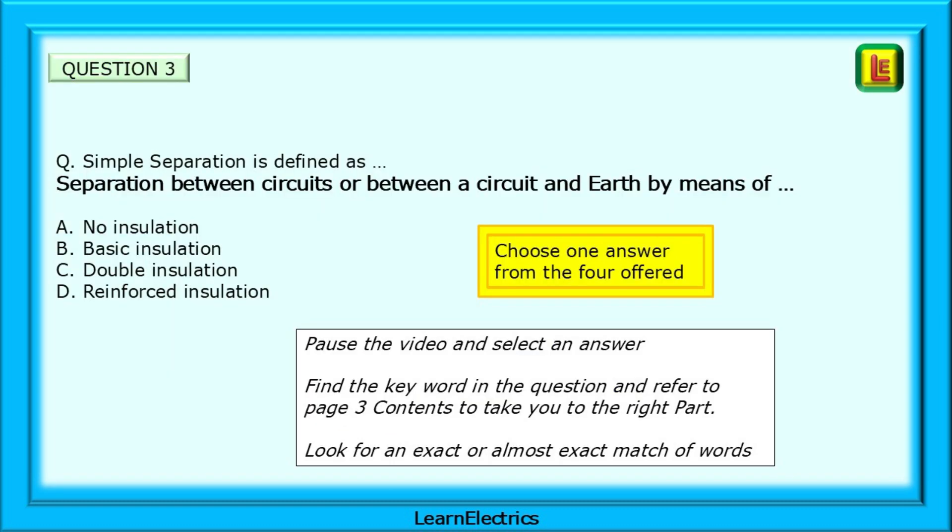Question 3 now. Simple separation is defined as separation between circuits or between a circuit and earth by means of what? Pause the video and select an answer. Find the key word in the question and refer to page 3 content to take you to the right part in the book.